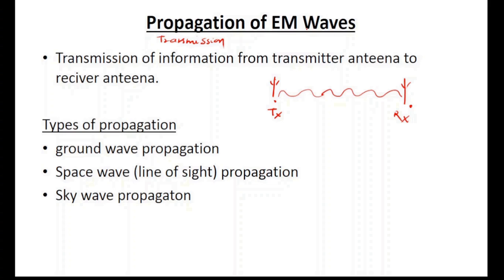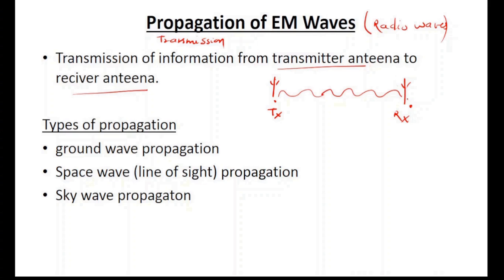In propagation of electromagnetic waves, we will use radio waves, since most communication uses radio waves. The definition of propagation of electromagnetic waves is: transmission of information from transmitter antenna to receiver antenna. There are three types: the first is ground wave, the second is space wave (line of sight propagation), and the third is sky wave propagation.